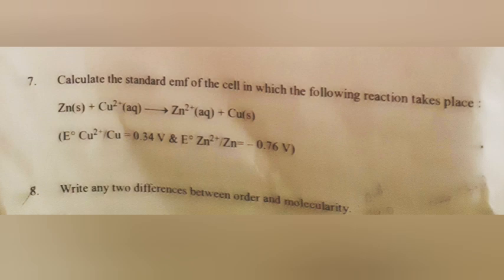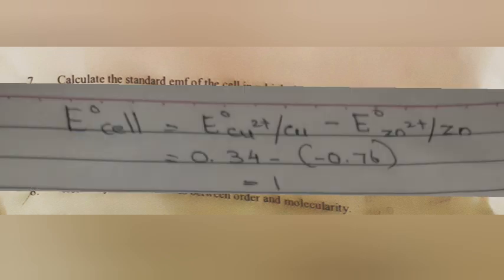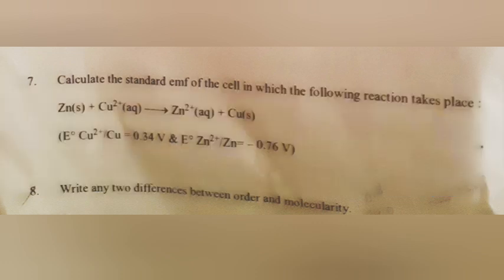Question 7: Calculate the standard EMF of the cell in which the following reaction takes place. Answer: E⁰cell = E⁰(Cu²⁺/Cu) − E⁰(Zn²⁺/Zn) = 0.34 − (−0.76) = 1.10 V.